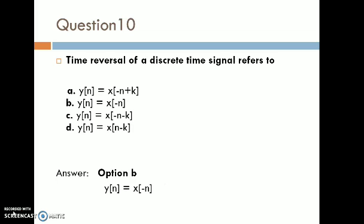The last question: time reversal of a discrete time signal refers to — A) y(n) = x(-n+k); B) y(n) = x(-n); C) y(n) = x(-n-k); D) y(n) = x(n-k). To reverse a signal, you reverse the inner variable in the equation. The correct answer is option B: y(n) = x(-n).